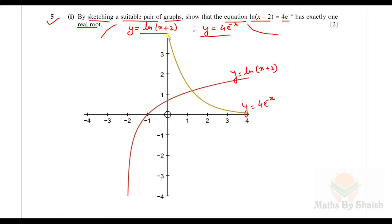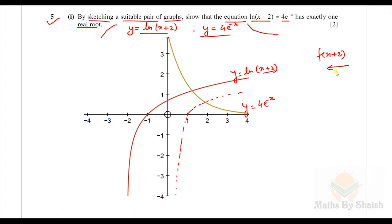For y = ln(x+2), we know that ln(x) passes through the x-axis at x = 1. Since it is (x+2), it is like f(x+2), which is a horizontal translation by minus 2. That's why it is translated to the left. We can see they intersect at only one point, confirming exactly one real root.